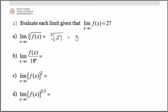In letter b, we want the limit of the function divided by 18, so we're going to do 27, which was the limit of that function as x approaches c, divide that by 18, and we can simplify that to 3 halves.